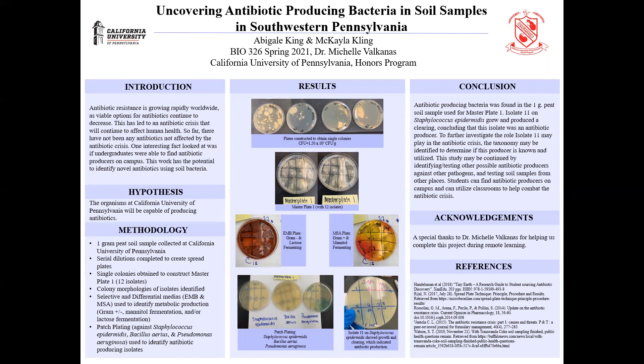To do this, we collected one gram of peat soil behind Frick Hall underneath some bushes and created serial dilutions from that sample. From the serial dilutions, we created spread plates to obtain single colonies to create master plates. Each lab group had their own master plate — Abby and I worked with master plate one, as we'll describe a little bit later. These master plates were then used to complete a few different types of tests.